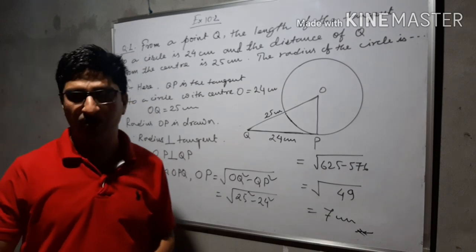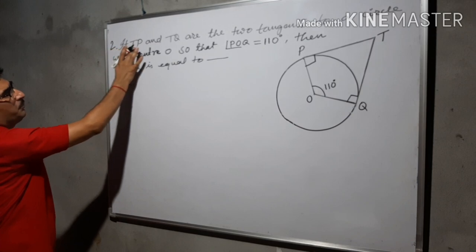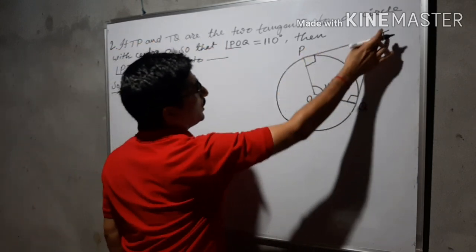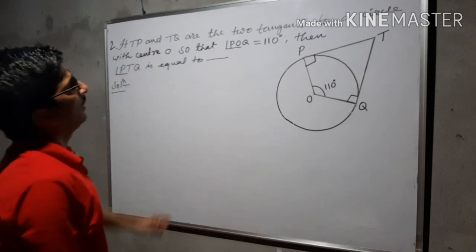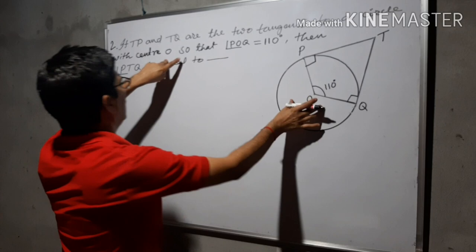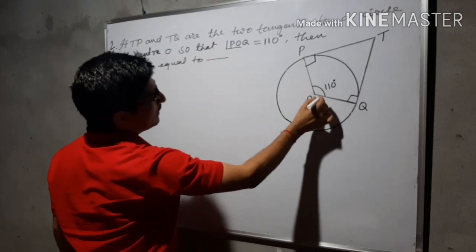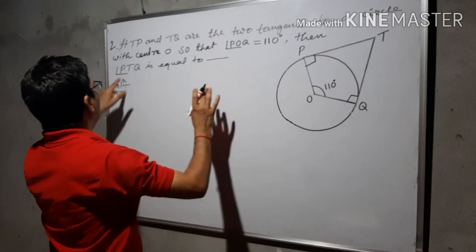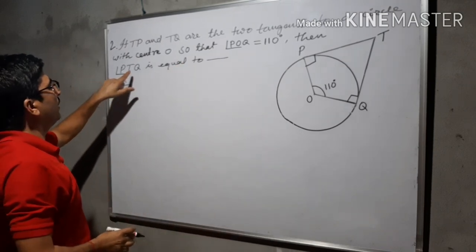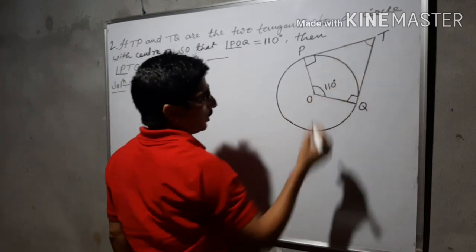Next question — question number 2. If TP and TQ are the two tangents to a circle with center O, and angle POQ equals 110 degrees — this angle is given as 110 degrees — then we have to find out angle PTQ. Angle PTQ is equal to — we have to find out this angle.